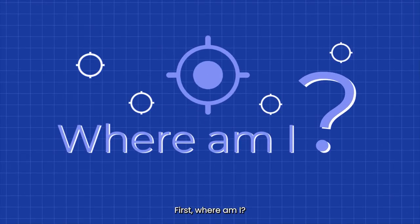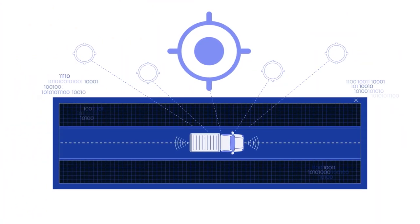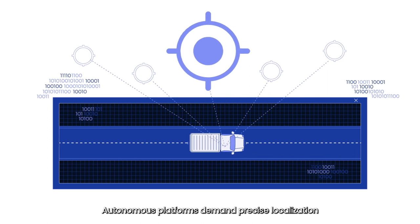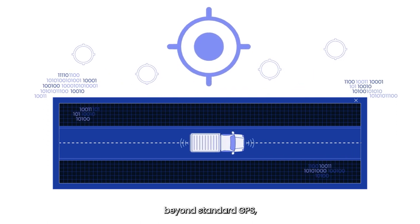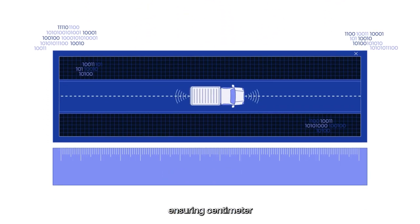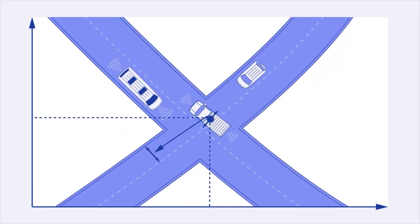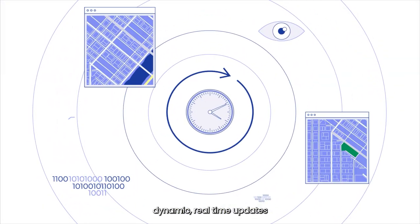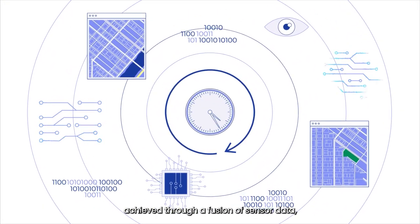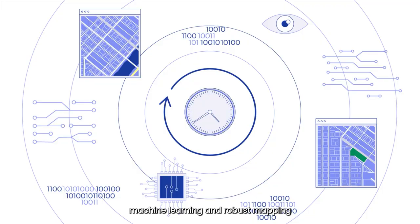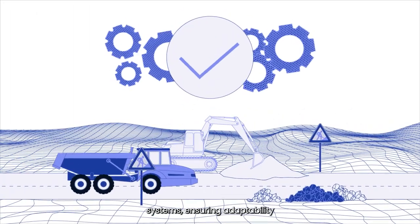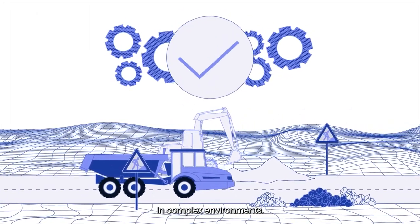First, where am I? Autonomous platforms demand precise localization beyond standard GPS, ensuring centimeter-level accuracy in understanding their position relative to roads and obstacles. This involves dynamic real-time updates, achieved through a fusion of sensor data, machine learning, and robust mapping systems, ensuring adaptability in complex environments.